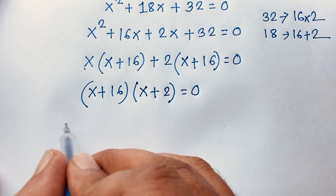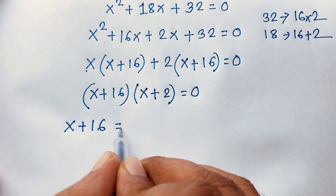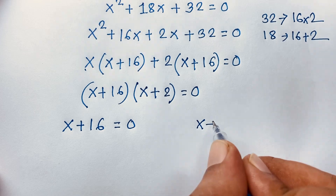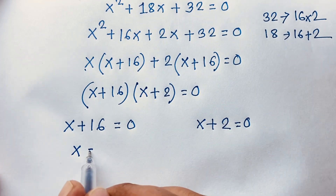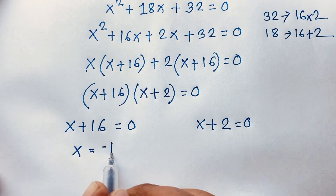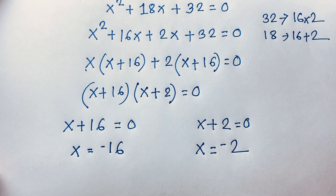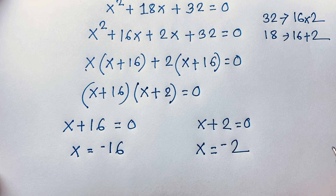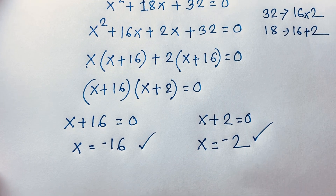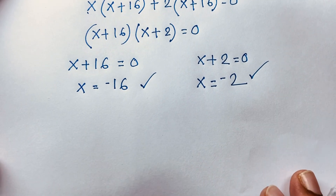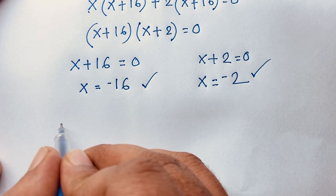We have two cases. First case: x plus 16 equals zero. Second case: x plus 2 equals zero. Therefore x equals negative 16, and x equals negative 2. So our final answers from Method 1 are x equals negative 16 and x equals negative 2.